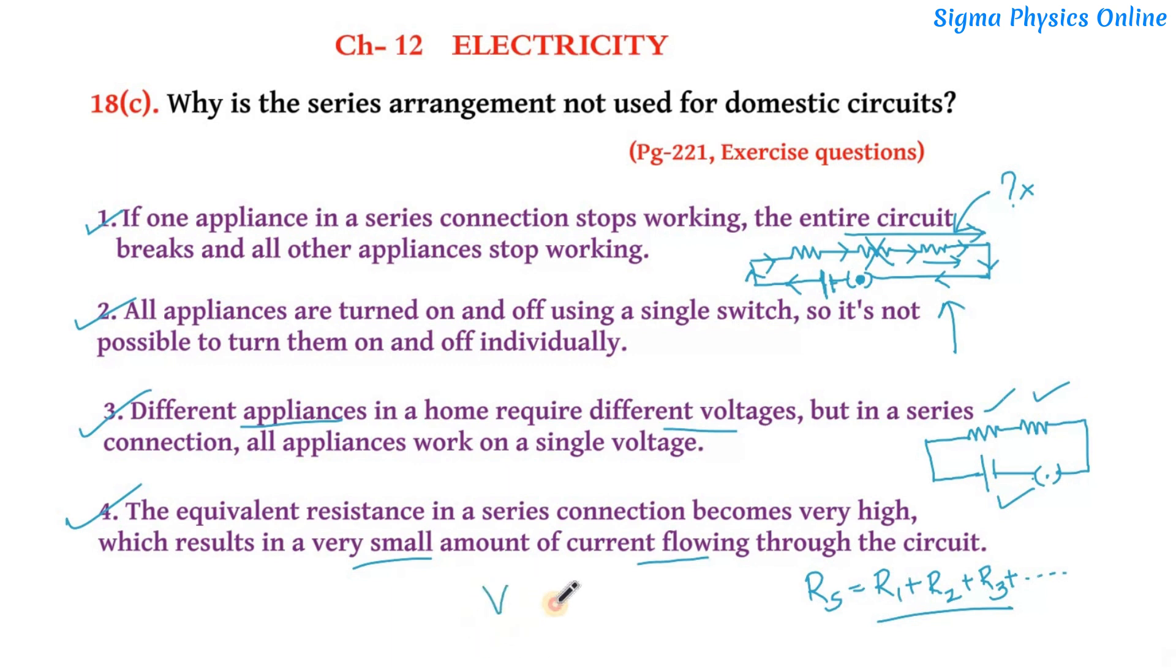From Ohm's law, we know that V is equal to IR, or V by I is equal to R. So the current varies inversely as the resistance. Now as the resistance becomes high, the current flowing in the circuit will be low. So a very small amount of current will flow through this circuit when all the resistors or when all the appliances are connected in series.